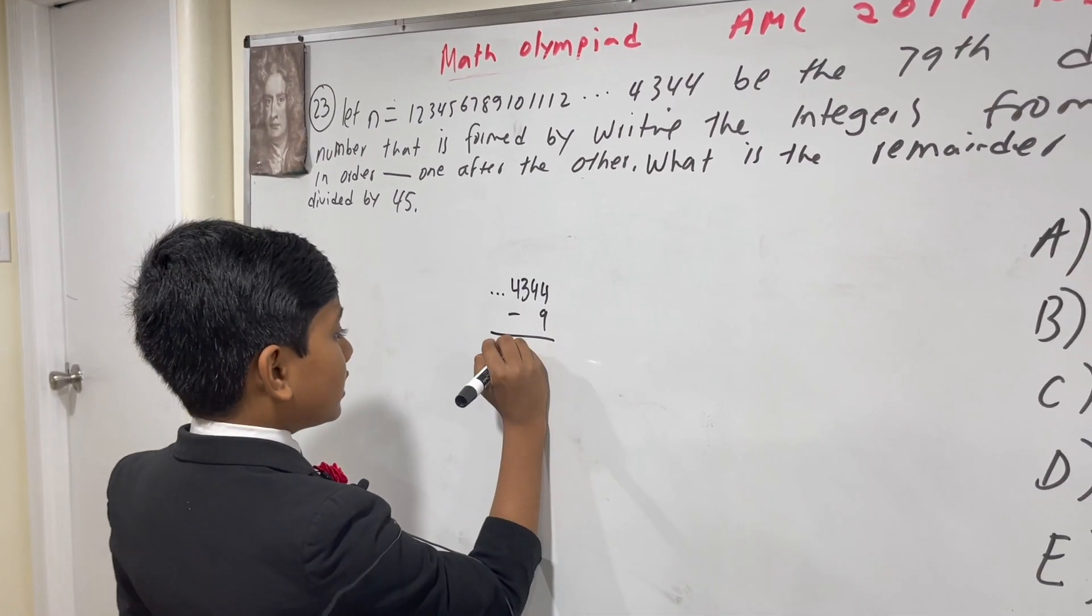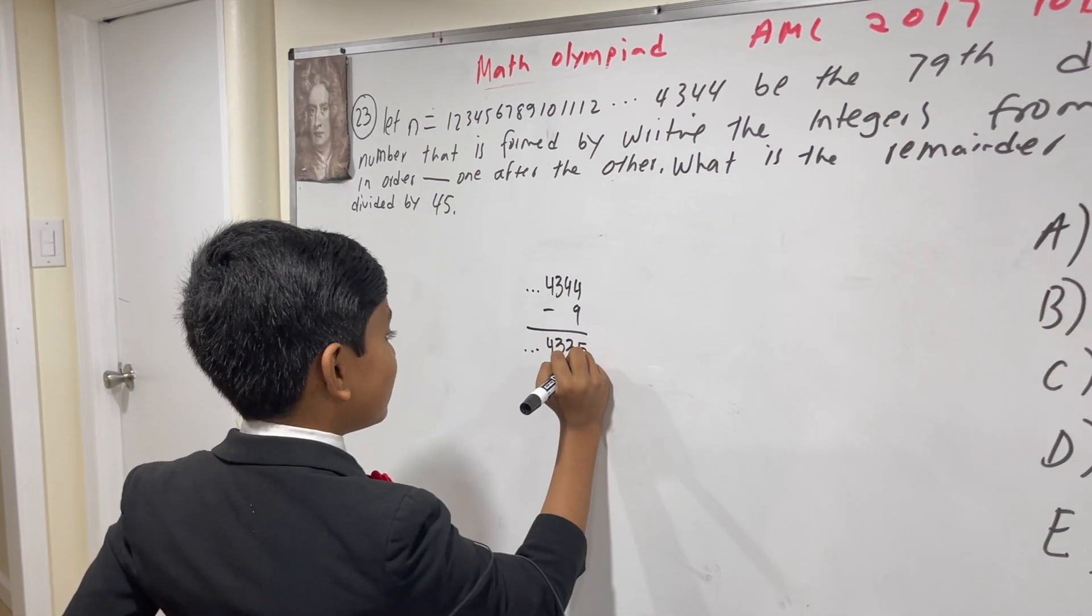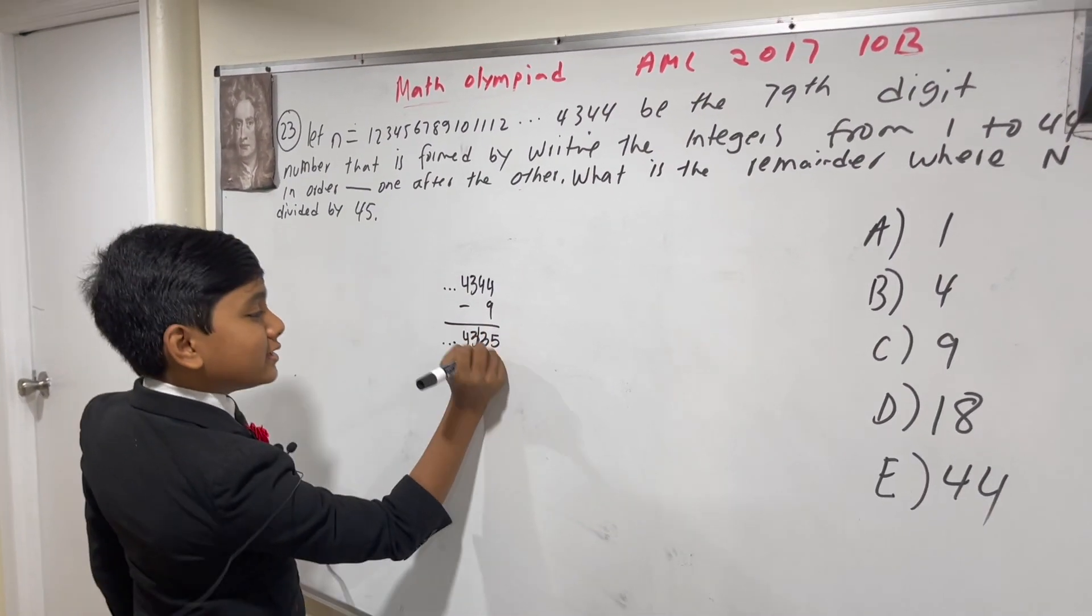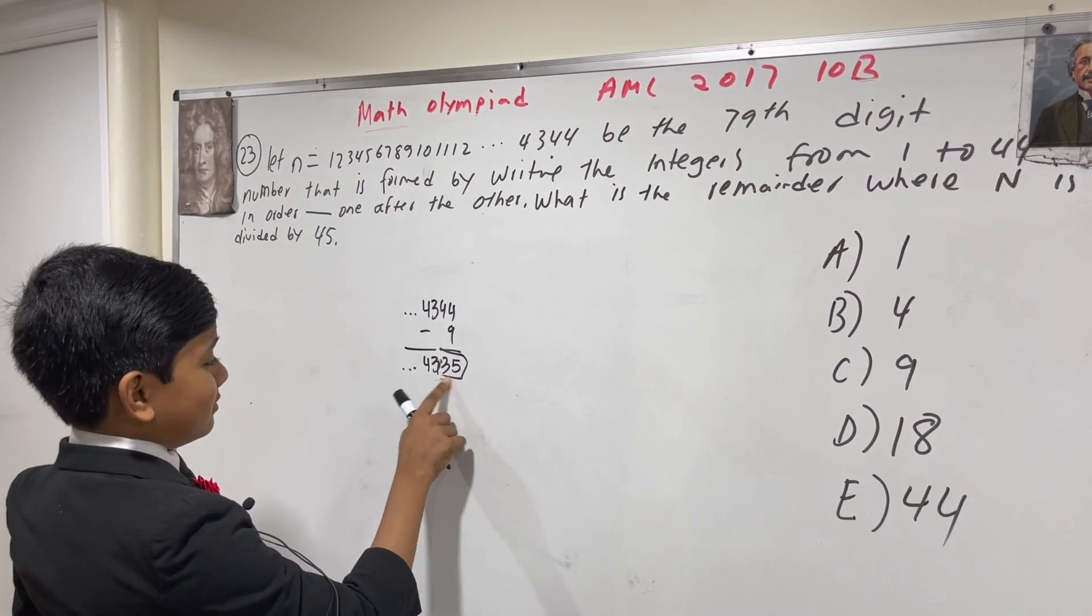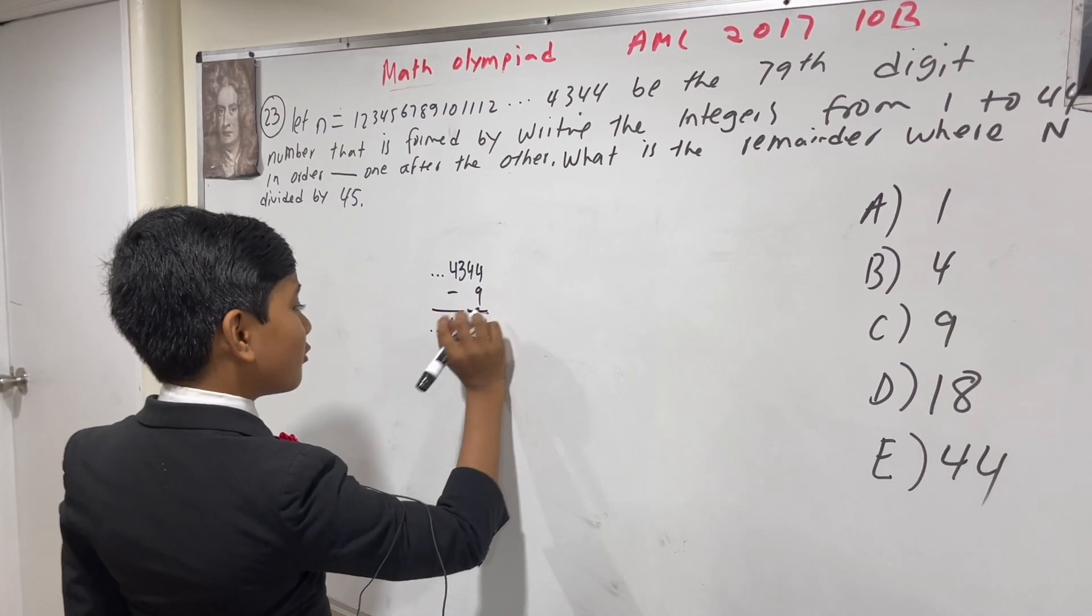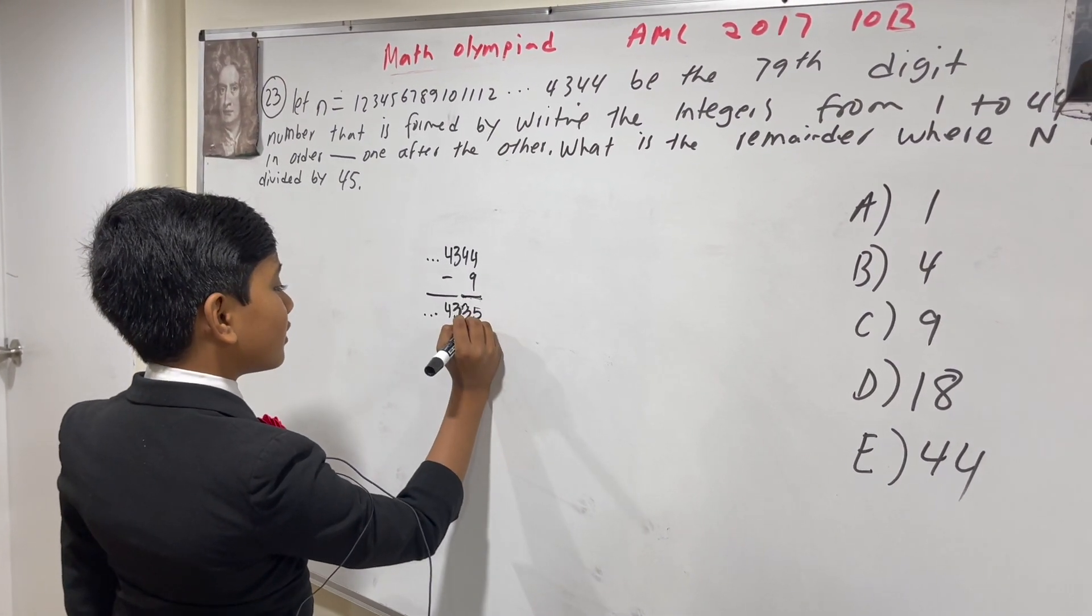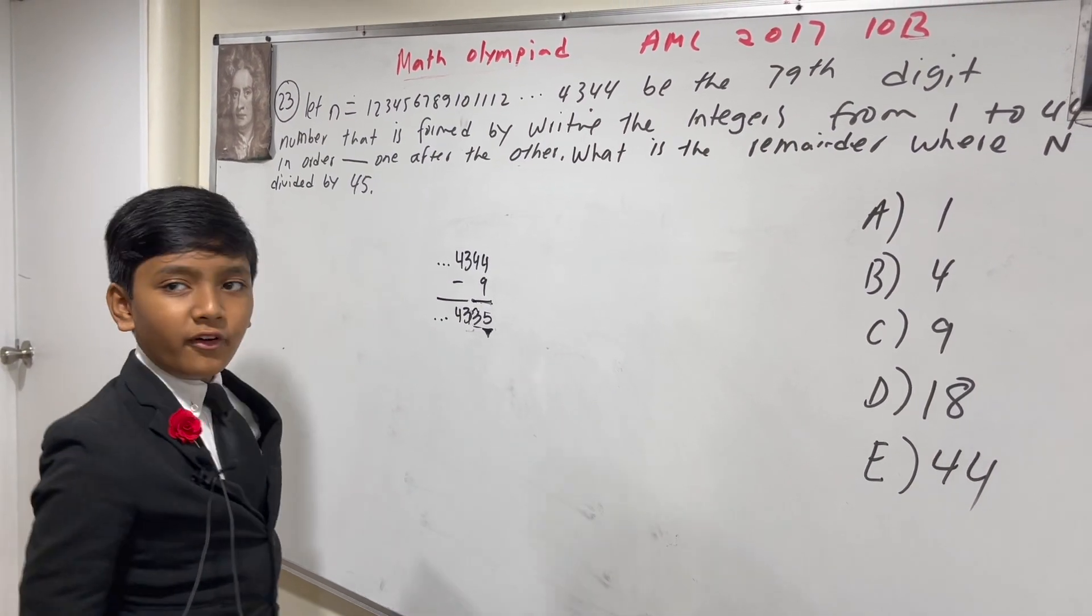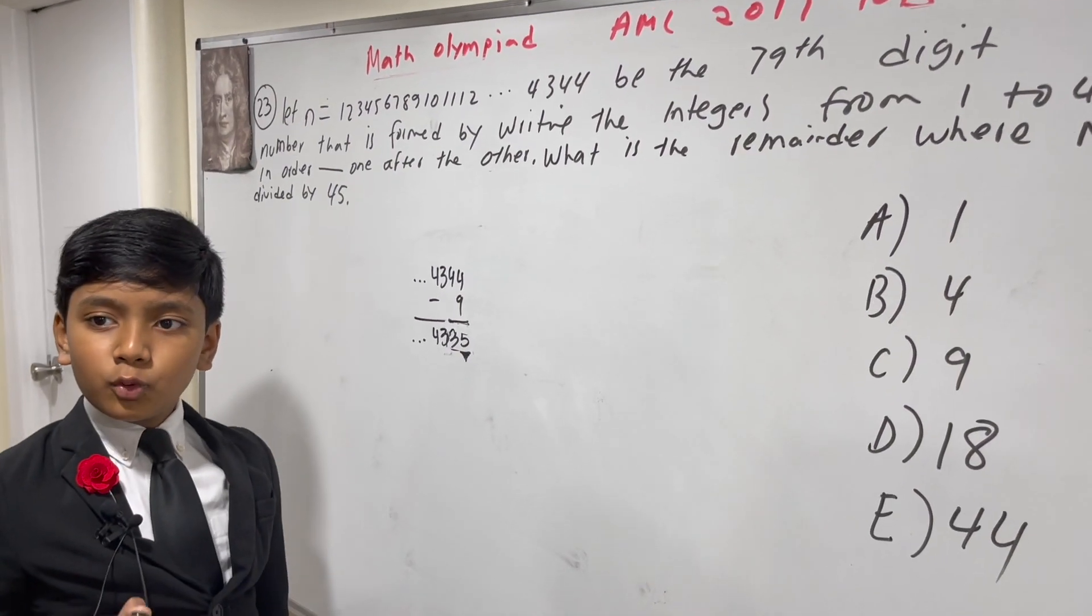This gives us 43, 35. And since this ends with a 5, it's now divisible by 5. So, if it's divisible by 9 and by 5, it's divisible by 45.